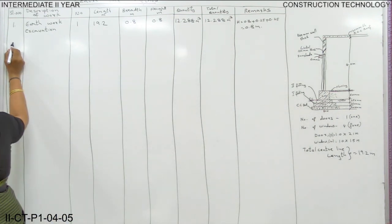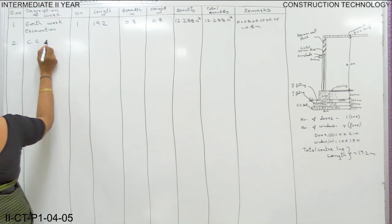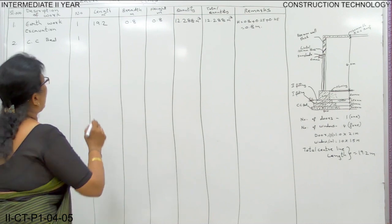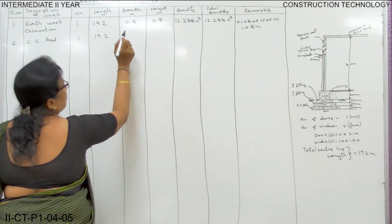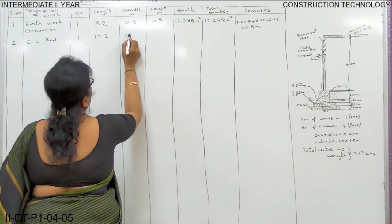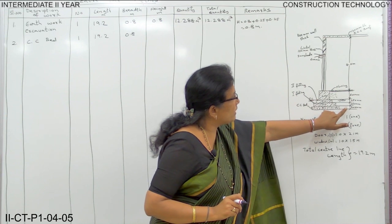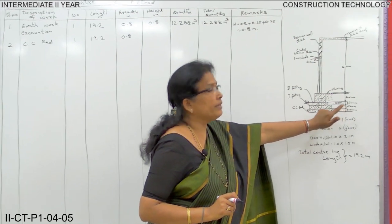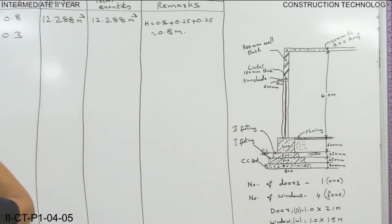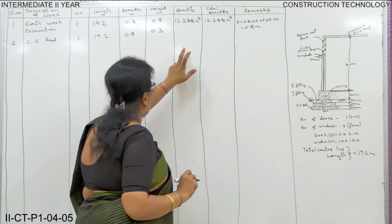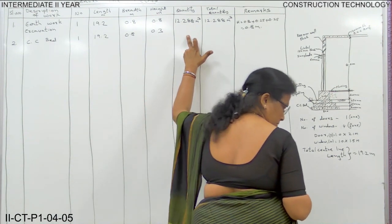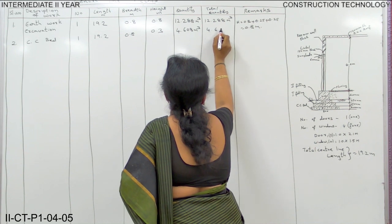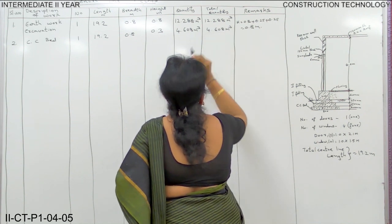Next is item 2: CC bed, meaning cement concrete bed in foundation. Number 1. The length is again 19.2 meters and the breadth is 0.8 from the drawing. The depth is the concrete TC bed here, which is 300 mm = 0.3 meter. Multiply everything to get the quantity of CC bed: 4.608 cubic meters. Same value you write in total quantity also: 4.608 cubic meters.